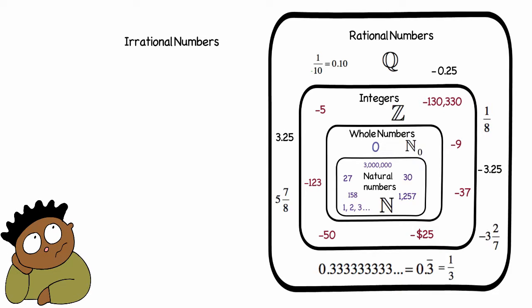The most famous one is pi, but there are many more. In fact, there are more irrational numbers than rational numbers. Irrational numbers cannot be written as a fraction. They are non-repeating, non-terminating decimals. And by that I mean the decimal goes on forever, without a repeating pattern.